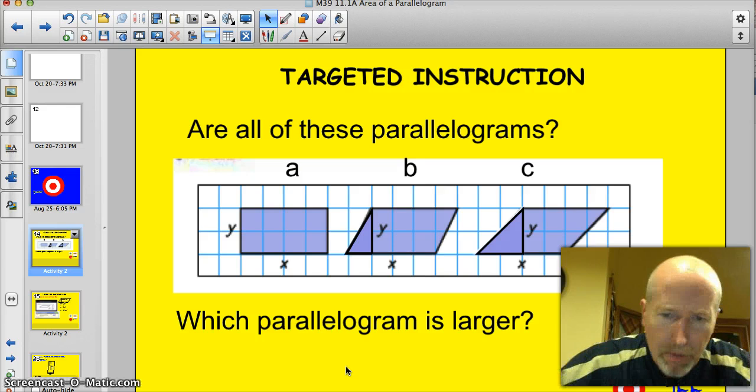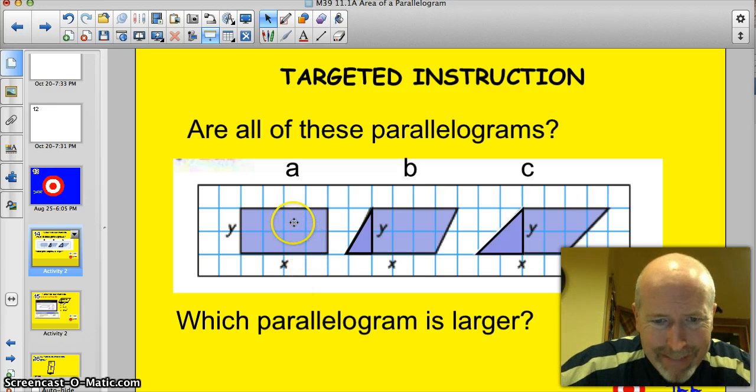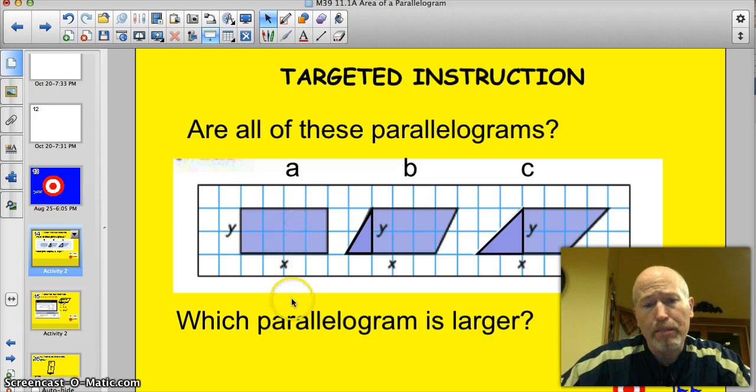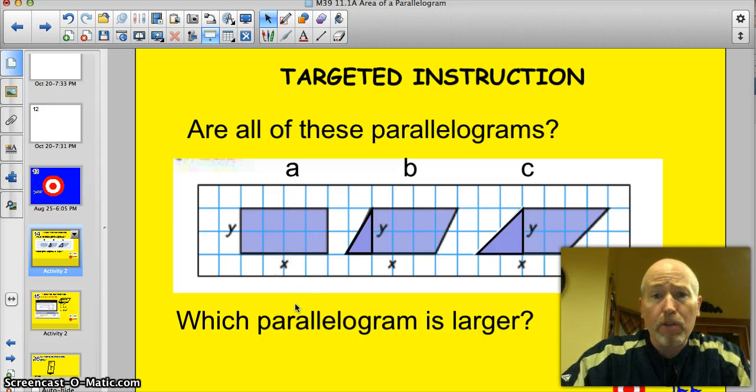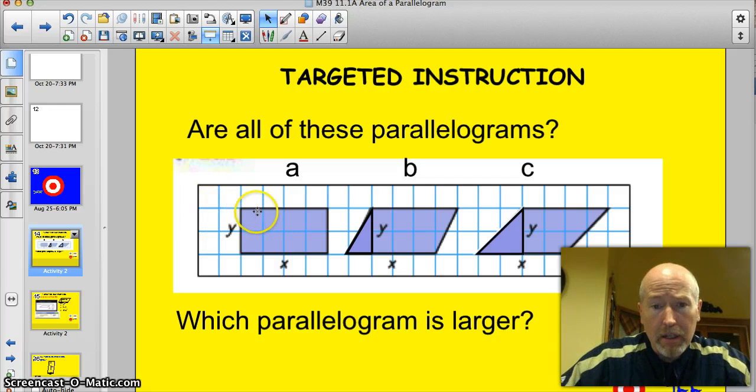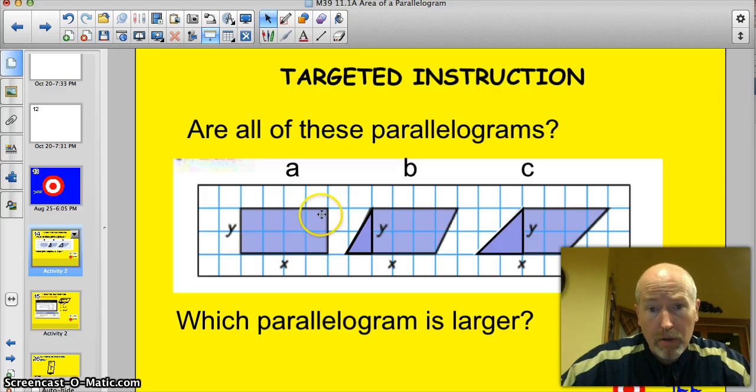Well, I know you're probably going, Nah, this one isn't a parallelogram. But actually, a is a parallelogram. Because a parallelogram is simply a quadrilateral with two sets of parallel sides. And this side is parallel to this side. And this side is parallel to this one. So rectangles are parallelograms. They happen to be special parallelograms called rectangles because they have right angles.